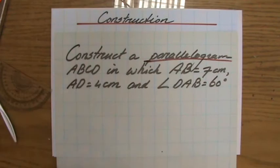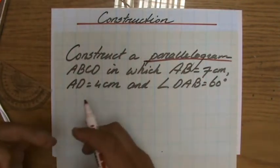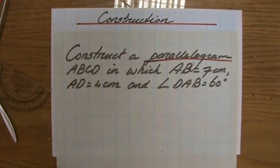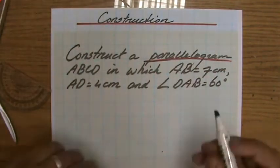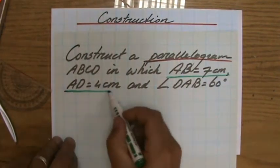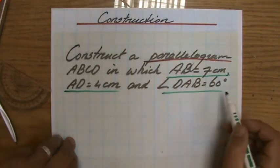The parallelogram ABCD, in which AB is 7 centimeters, AD is 4 centimeters, and angle DAB is 60 degrees. So the important information: AB is 7 centimeters, AD is 4 centimeters, and we have an angle of 60 degrees.